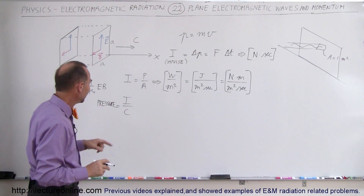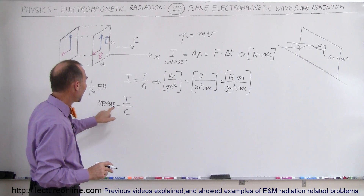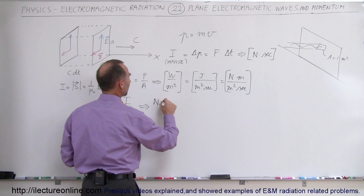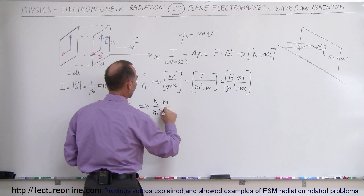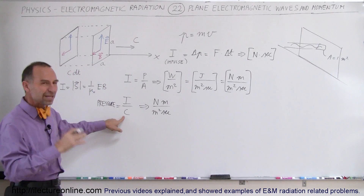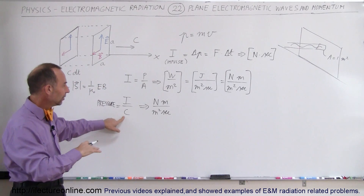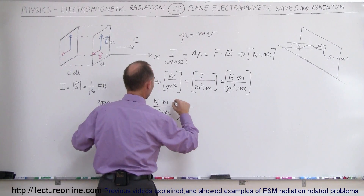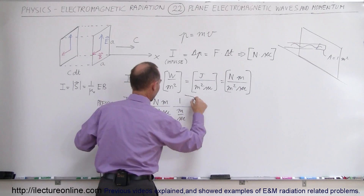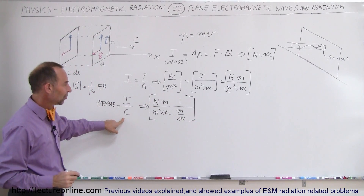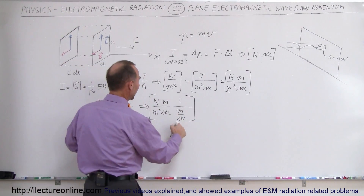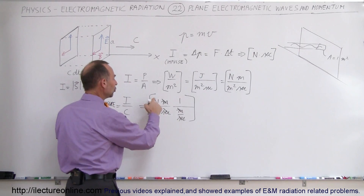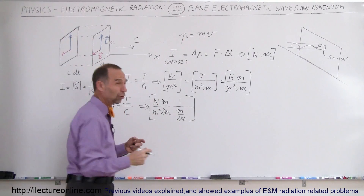I'll write it out so we don't confuse P for pressure with P for momentum or P for power. Pressure is equal to I divided by C. The units of that would be newton meters divided by meter squared times second, and then divided by C, which is meters per second — so that's times meters divided by seconds, because we divide by C. Notice that seconds cancel out and meters cancel out, and we're left with newtons per meter squared, which are the units for pressure.